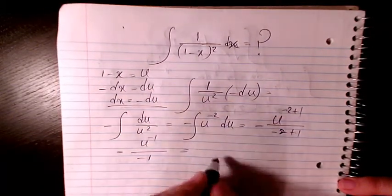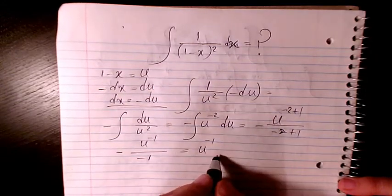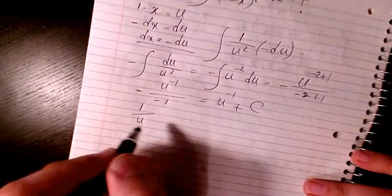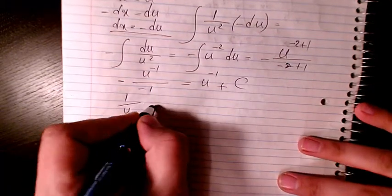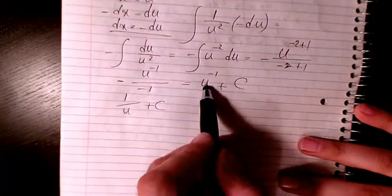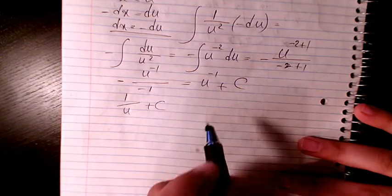So it would be u to the power of negative 1 plus c, or 1 over u plus c, because u to the power of negative 1 is the same as the inverse of u. And what was u?